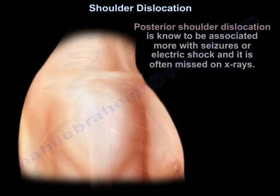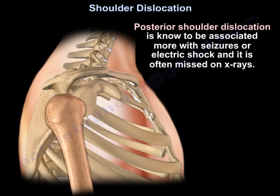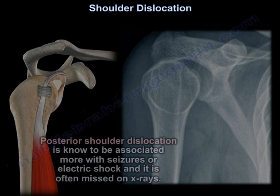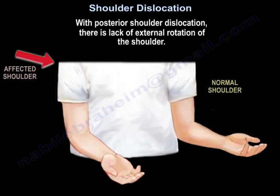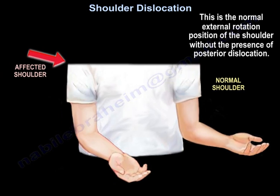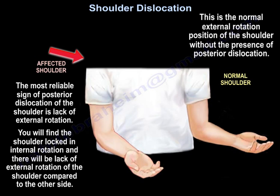Posterior shoulder dislocation is known to be associated more with seizures or electric shock, and it is often missed on x-rays. With posterior shoulder dislocation, there is a lack of external rotation of the shoulder. The most reliable sign is the shoulder being locked in internal rotation with lack of external rotation compared to the other side.